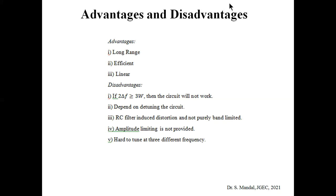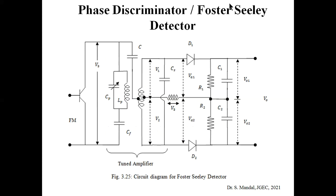Advantages of the balanced slope detector include a wider range from fc plus delta f to fc minus delta f and a more linear characteristic. Disadvantages include: if 2·delta f is greater than 3W the circuit does not work, it depends on detuning, the RC filter can introduce distortion, the output is not purely band-limited, and it is very difficult to precisely tune three frequencies fc, fc plus delta f, and fc minus delta f.